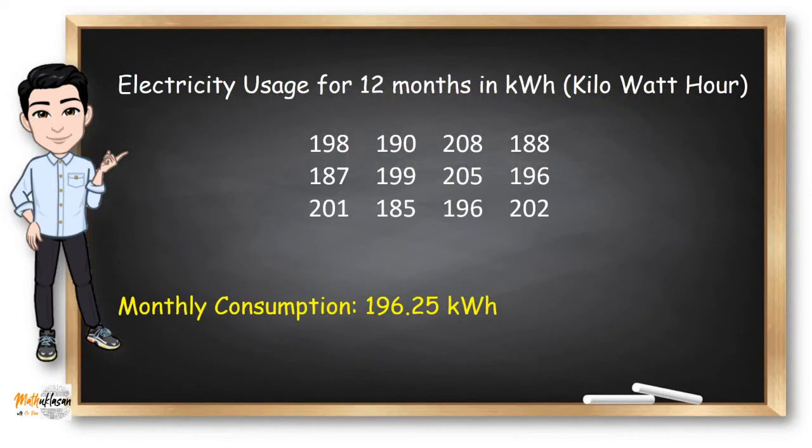For example, what if someone will ask you about your monthly electricity consumption and the data shown are your electricity usage for 12 months in kilowatt per hour. Instead of stating all these values, you can use a measure of central tendency and just say your monthly consumption is around 196.25 kilowatt per hour.